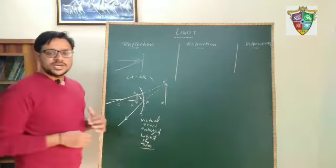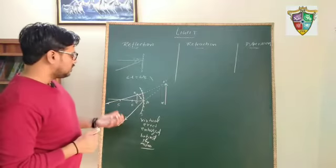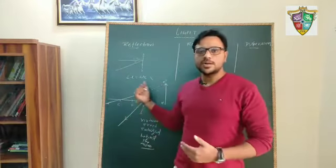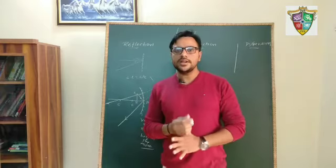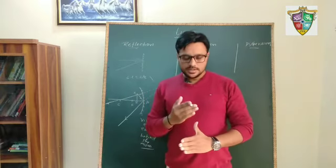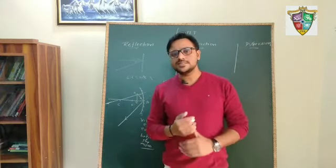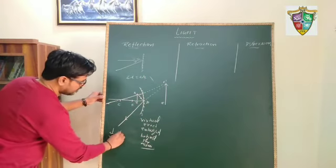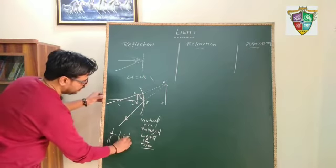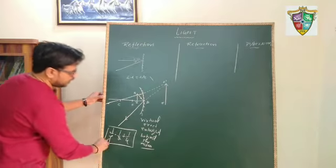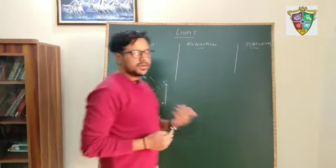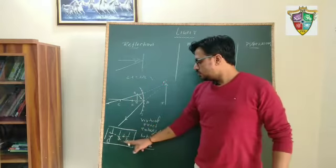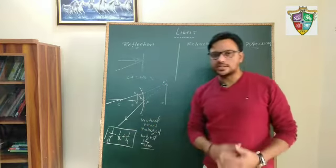This can be asked in the exam. If we relate focal length and radius of curvature, the formula is F = R/2. But if we relate focal length, object distance, and image distance, there is a relation known as the mirror formula: 1/F = 1/V + 1/U. This is the mirror formula. We will discuss numericals on this mirror formula. V is image distance, U is object distance, and F is focal length.